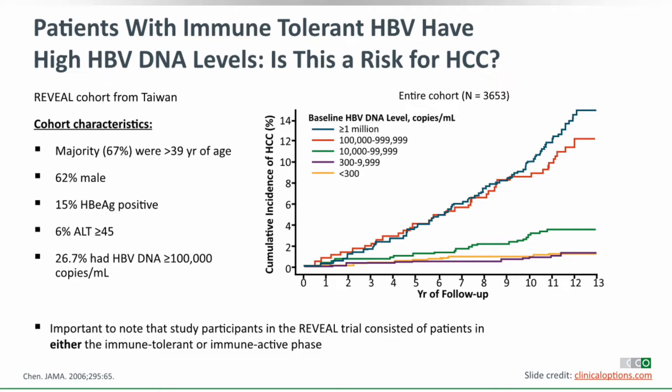However, one important aspect of the REVEAL study is that these were not generally immune-tolerant patients. In fact, 67% were over the age of 40, and most were e-antigen negative — not the e-antigen positive patients we're discussing with immune tolerance. This cohort is not truly informative about the risk for immune-tolerant patients specifically, where there is no underlying liver disease and the patient is young.